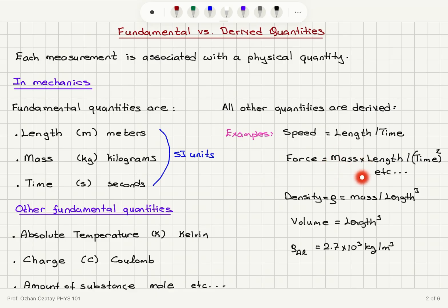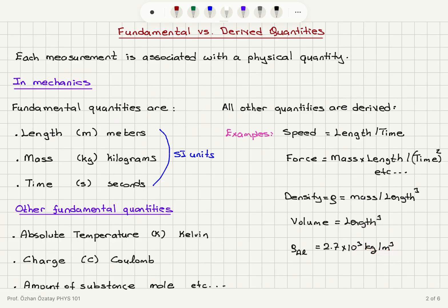Force is mass times acceleration — mass times length divided by time squared. Density is mass per unit volume, where volume is length cubed. For example, the density of aluminum is 2.71 × 10³ kilograms per meter cubed — that is the unit we use.